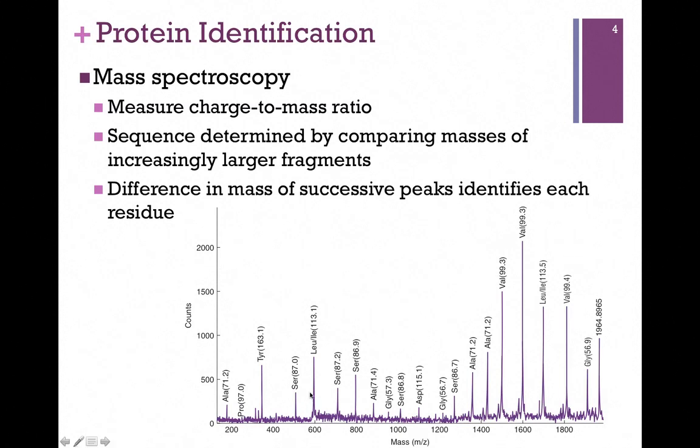The second largest fragment would contain two amino acids. We take the mass of that fragment, subtract from it the mass of alanine that we already know, 71.2, and that difference is 97. That corresponds to the amino acid proline. Now we know that the sequence of our peptide is alanine proline.